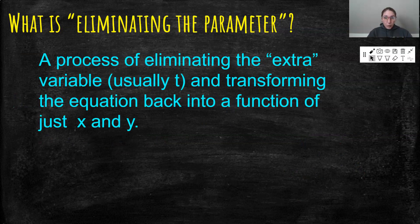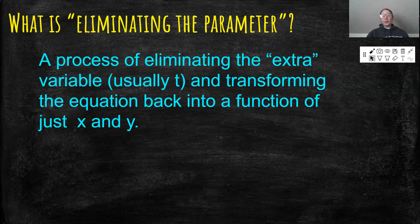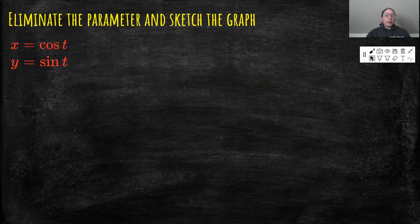Eliminating the parameter is the goal of today. We're really comfortable with looking at things in terms of x and y. Eliminating the parameter allows us to go from the parametric equation world back into x and y world — it's a process of eliminating the extra variable (usually t) and transforming the equation back into a function of x and y. Let's see a bunch of examples.